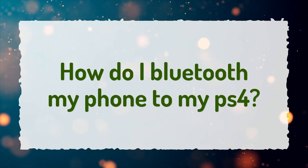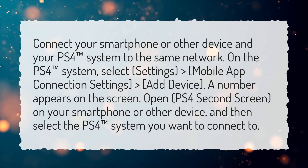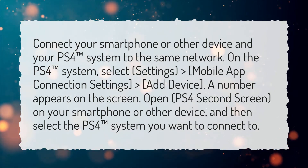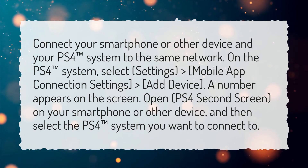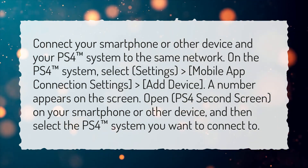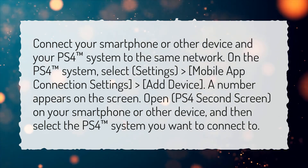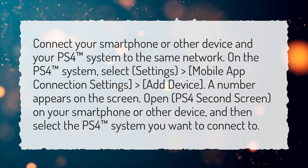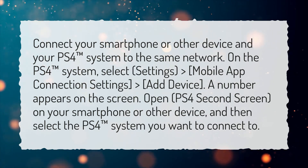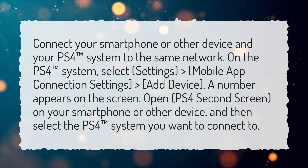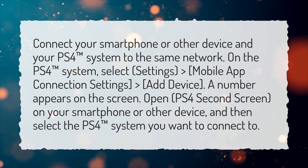How do I Bluetooth my phone to my PS4? Connect your smartphone or other device and your PS4 system to the same network. On the PS4 system, select Settings, then Mobile App Connection Settings, then Add Device. A number appears on the screen. Open PS4 Second Screen on your smartphone or other device, and then select the PS4 system you want to connect to.